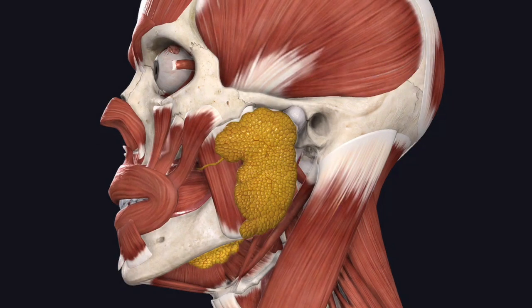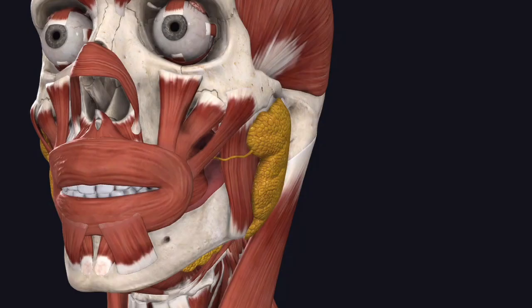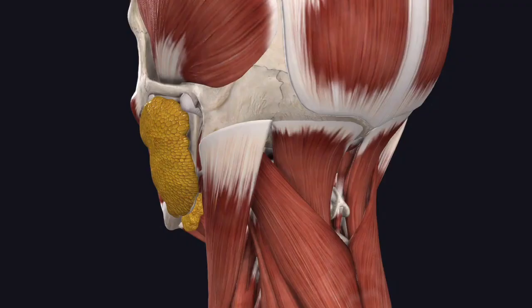The presenting parts: the apex of the gland and the base of the gland, and you have three surfaces — a superficial surface, an anteromedial surface, and a posteromedial surface.